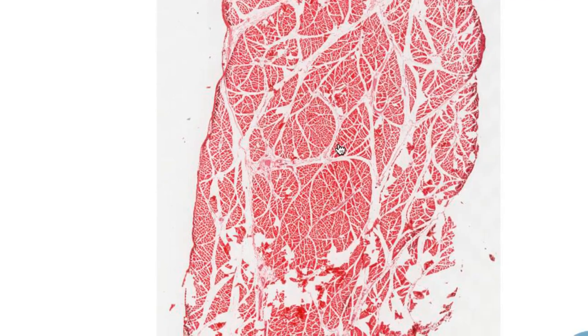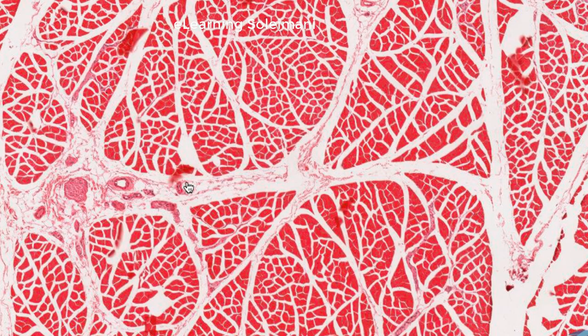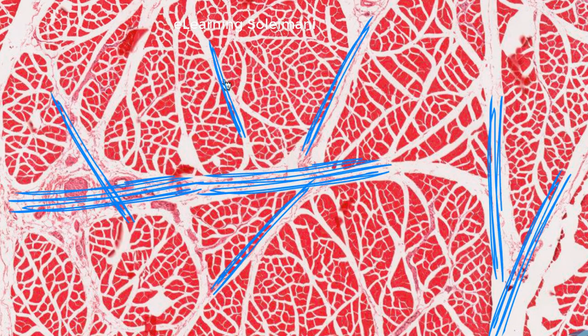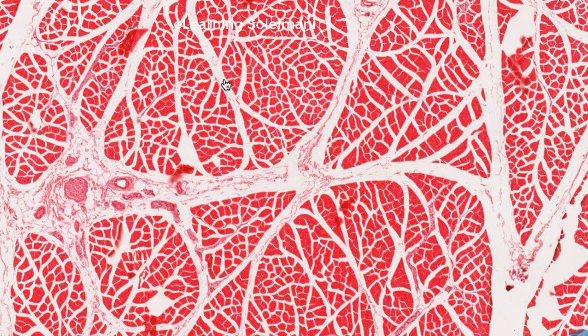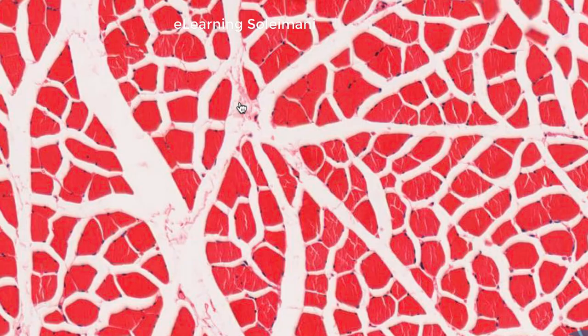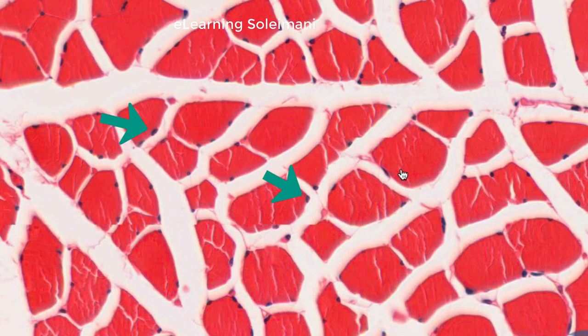This slide shows a transverse section of a striated muscle tissue. You can observe the presence of epimysium, muscle fascicles, and perimysium around them. The nuclei of the muscle cells are visible just beneath the sarcolemma.